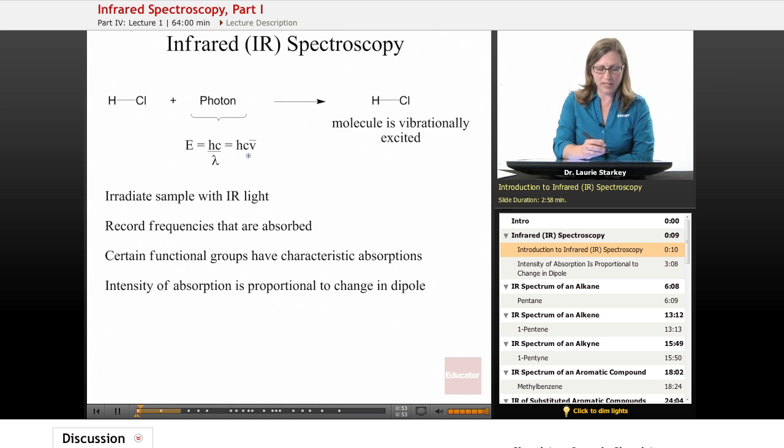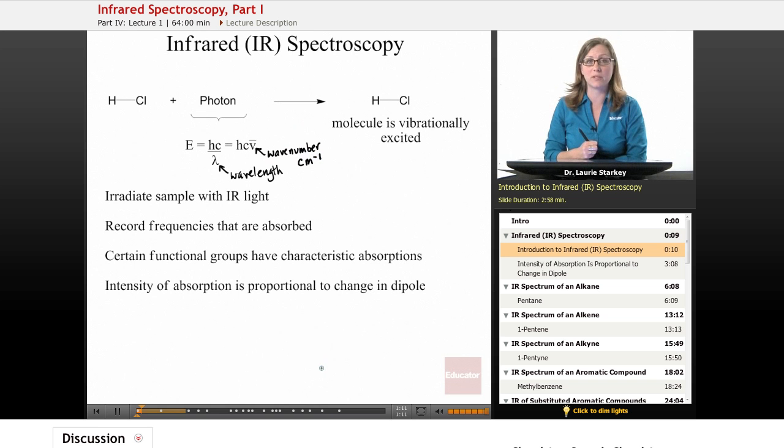And we're going to be using a different, so this is wavelength, this lambda here. And we're going to be using this V with a line over it, which is short for wave number. And these are in units called reciprocal centimeters, so it's centimeters to the minus one.